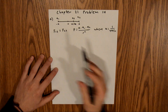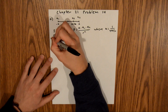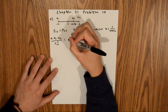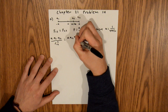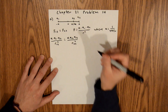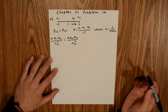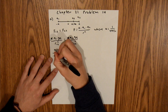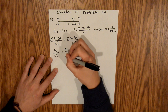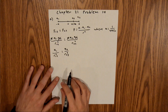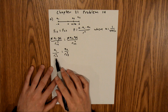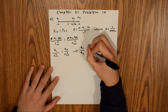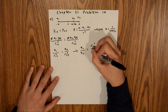Expanding out each of these forces, k times q1 q3 over r13 squared equals k times q2 over r23 squared. We can cancel the k on both sides, leaving us with q1 over r13 squared equals q2 over r23 squared. Rearranging, q1 over q2 is equal to r13 squared over r23 squared. This is the ratio we're looking for.